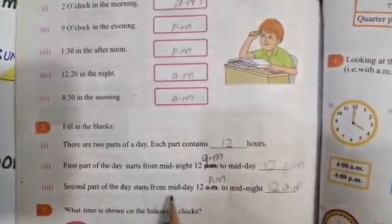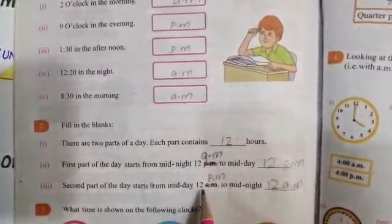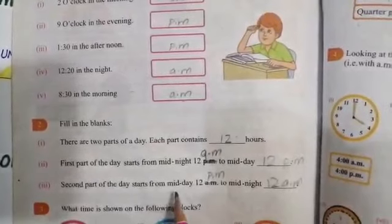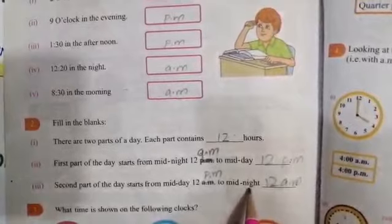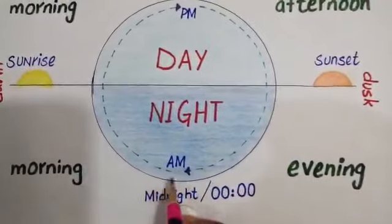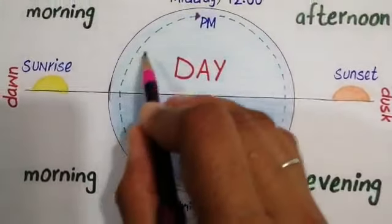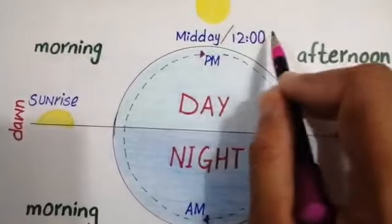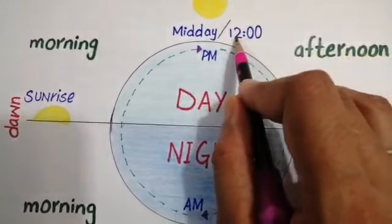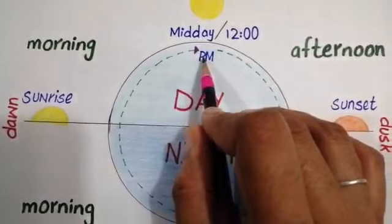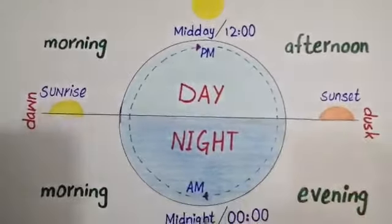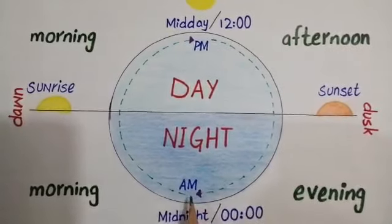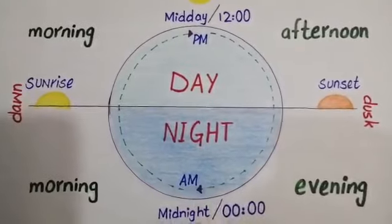The second part of a day starts from mid-day 12 PM - our second part starts from 12 PM and goes to midnight. As I showed you, our day starts from AM, and when it is 12 o'clock in the afternoon, our day is half and PM starts. This PM continues until midnight - until 12 o'clock at night.